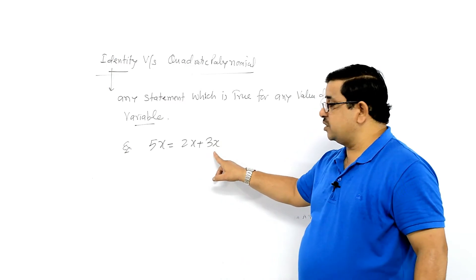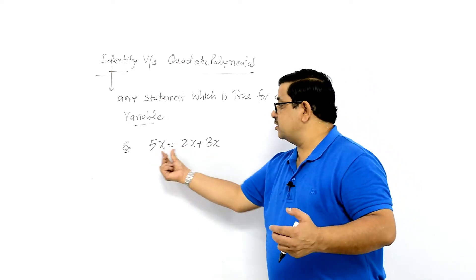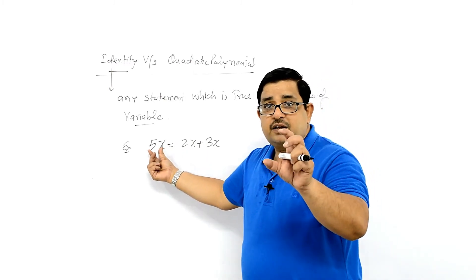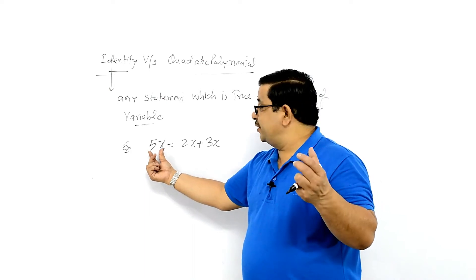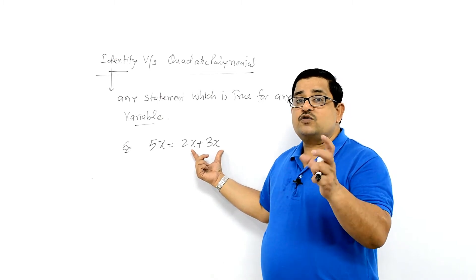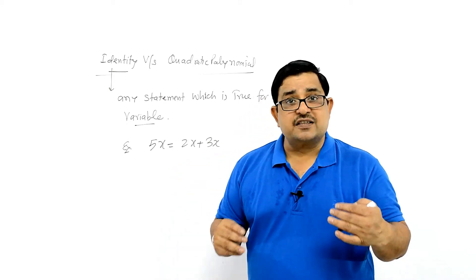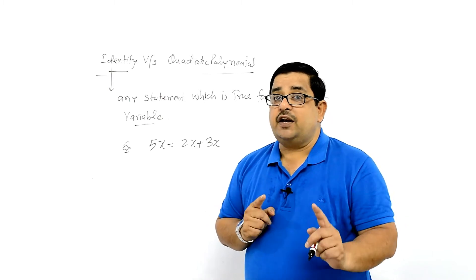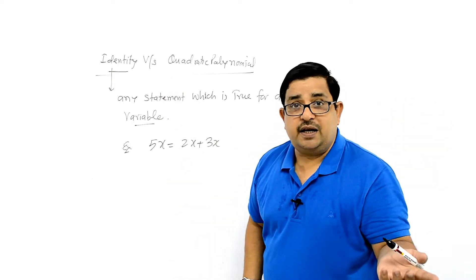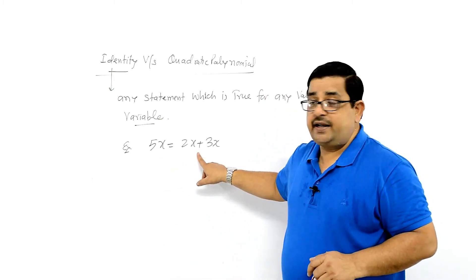Example: 5x = 2x + 3x — यह एक identity है। Left hand side में x की कोई भी value रखें और simplify करें, वही value right hand side में रखने पर same result मिलेगा। यह statement किसी भी value of variable के लिए true है, इसलिए यह identity है। इसमें x की infinite values satisfy करती हैं।